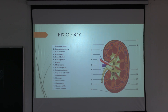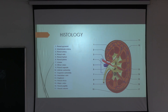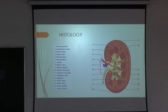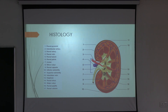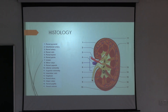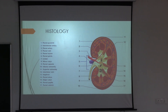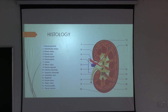The minor calyces join to form the major calyx, then the renal pelvis followed by the ureter. This whole area is known as the renal hilum. The structures present at the renal hilum are the renal artery, the vein, and the pelvis — these are the three major structures at the renal hilum.